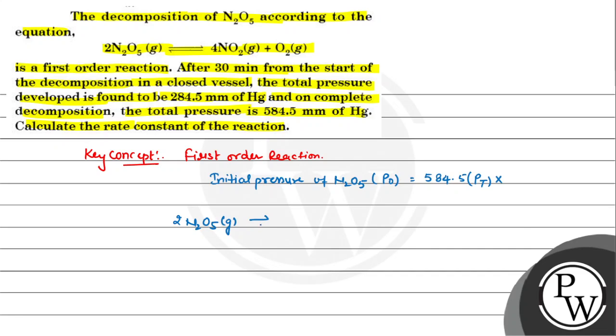N2O5 gaseous gives 4NO2 gaseous plus O2 gaseous. Writing the stoichiometric coefficients for N2O5 gaseous.